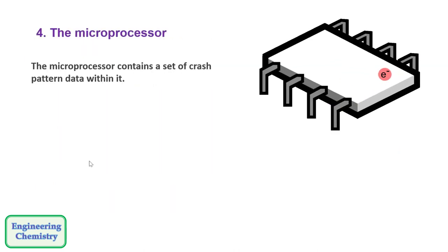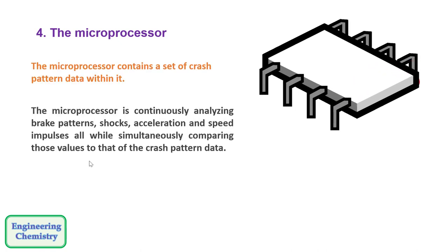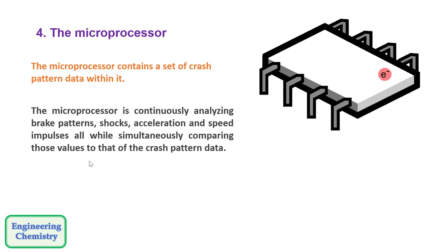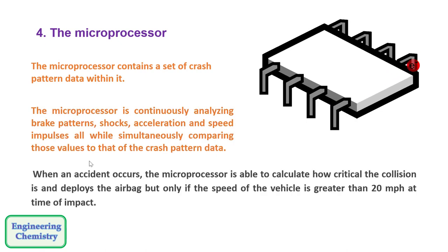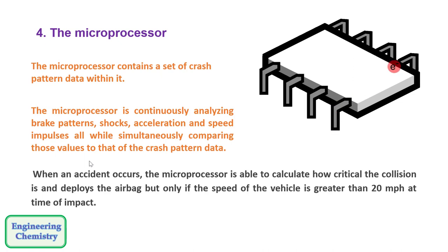The fourth component is the microprocessor. It contains a set of crash pattern data and is continuously analyzing brake patterns, shocks, acceleration, and speed impulses, simultaneously comparing those values to crash pattern data. When an accident occurs, the microprocessor calculates how critical the collision is and deploys the airbag, but only if the speed of the vehicle is greater than 20 miles per hour at the time of impact.